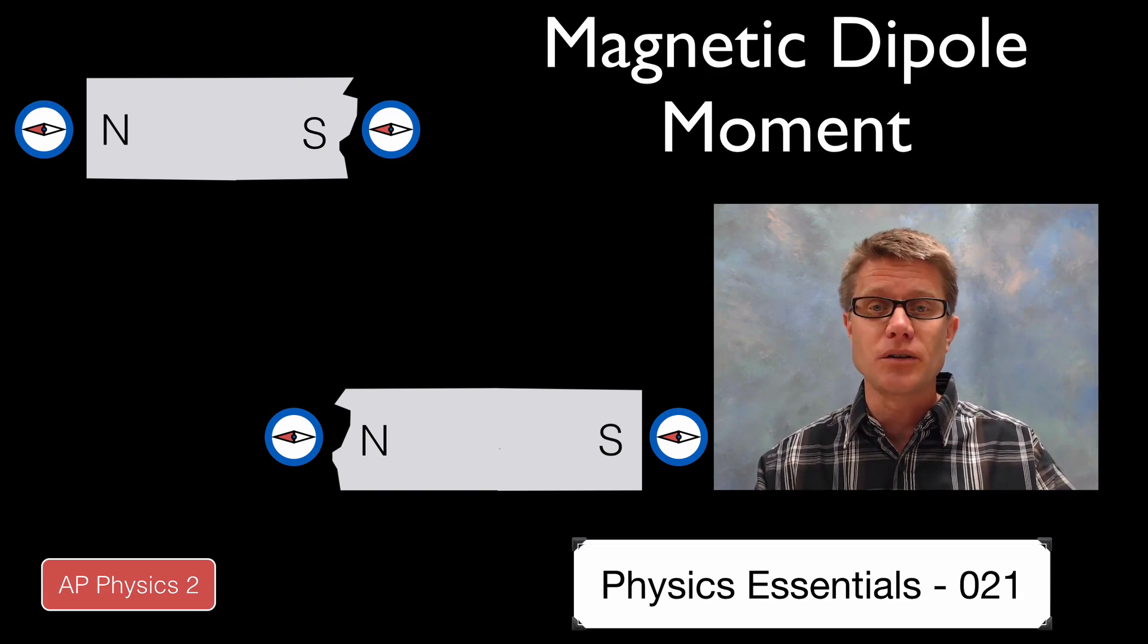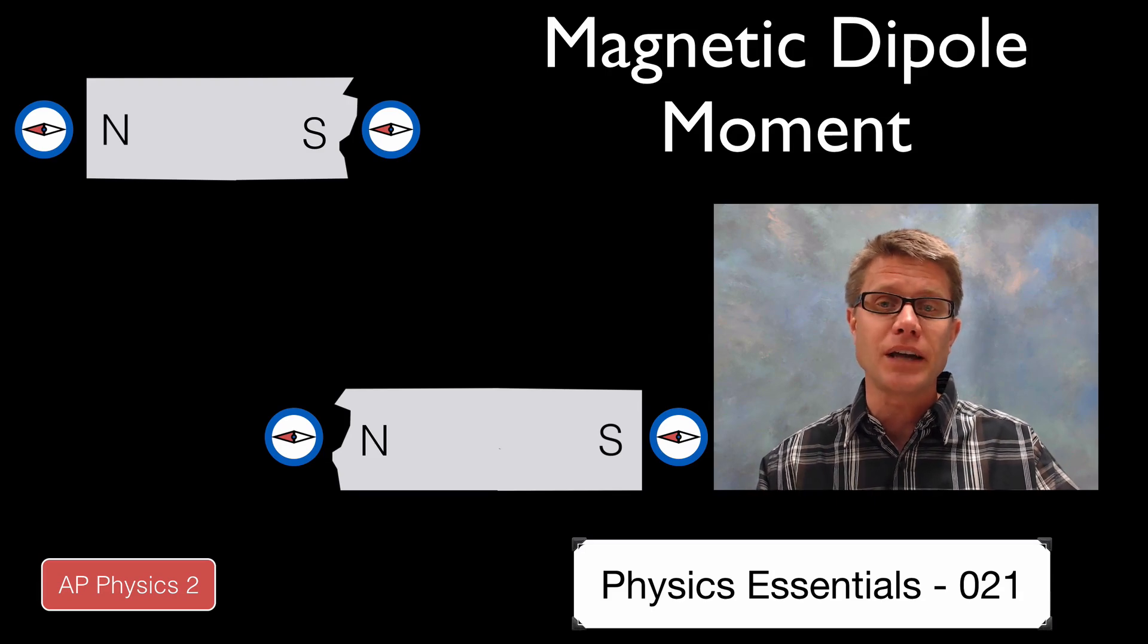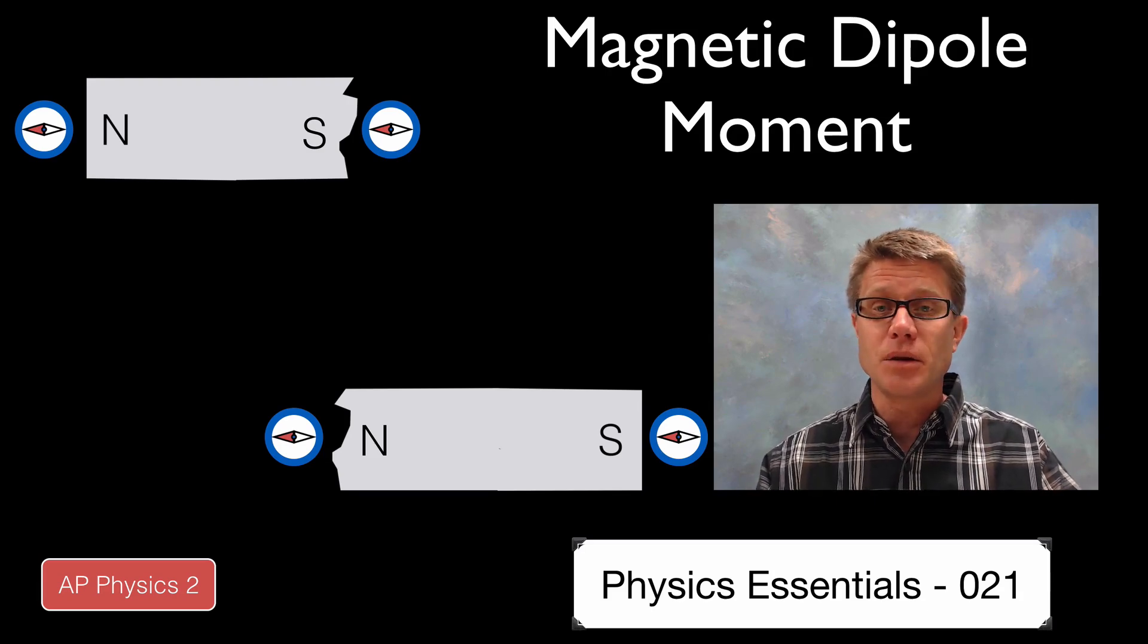You can keep breaking it and breaking it. What you will find is you will just make smaller and smaller magnets. So there is something intrinsic in the magnet itself that is causing it to be magnetized. And that is the magnetic dipole moment.